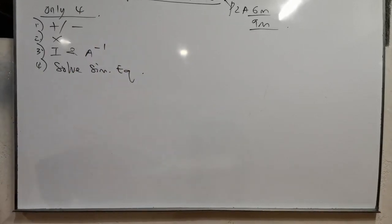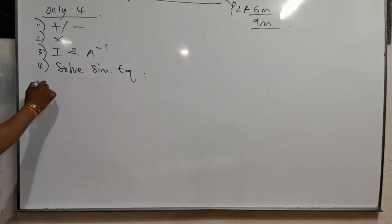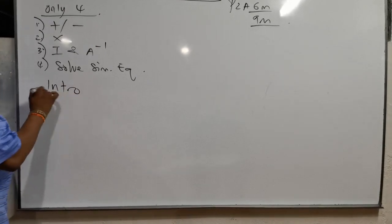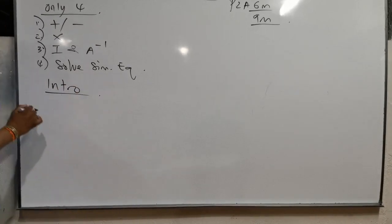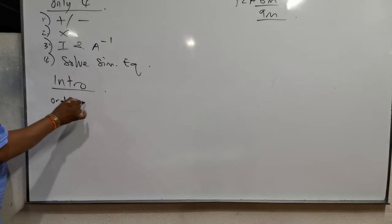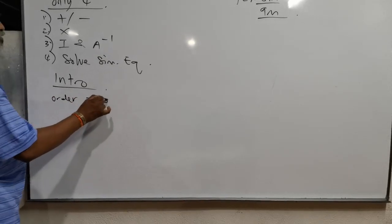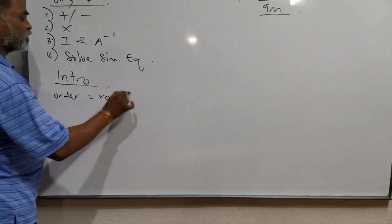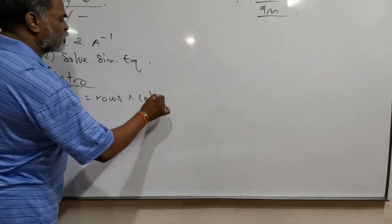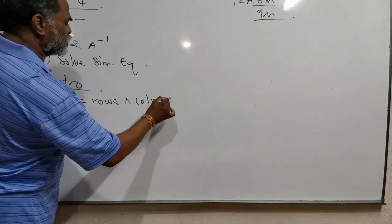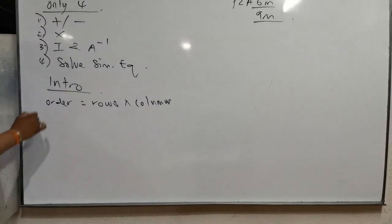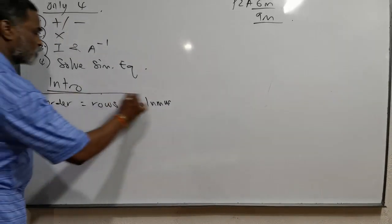I am going to start with the introduction. First of all, you must know the order. Order means rows times columns.